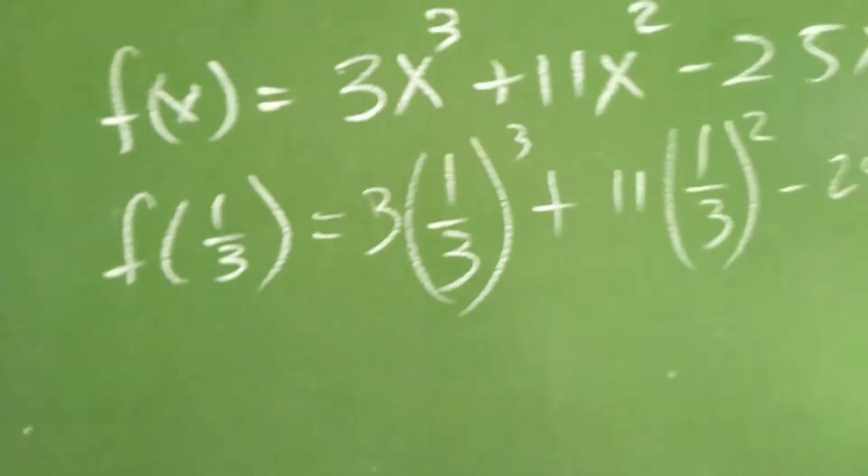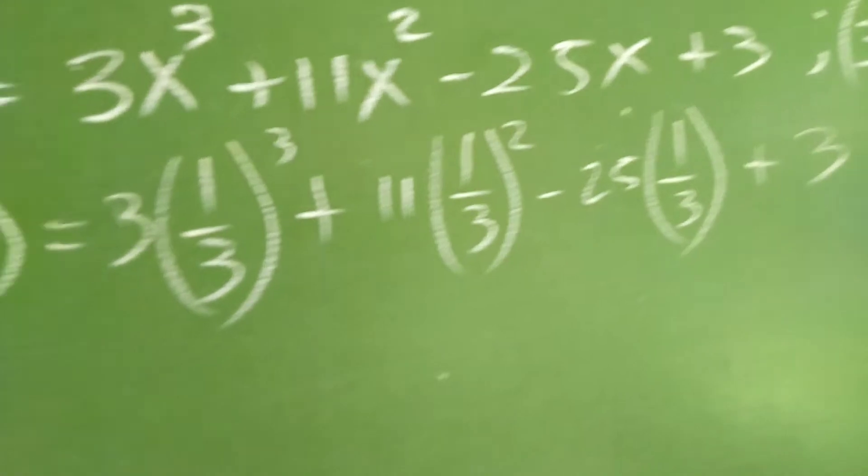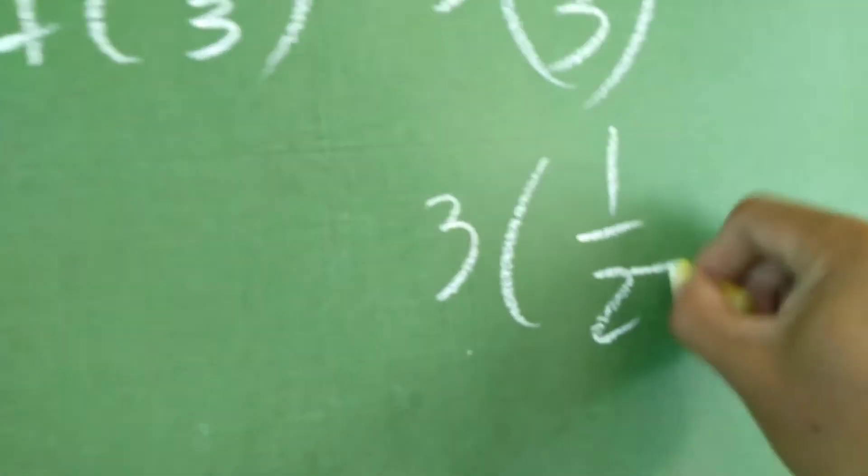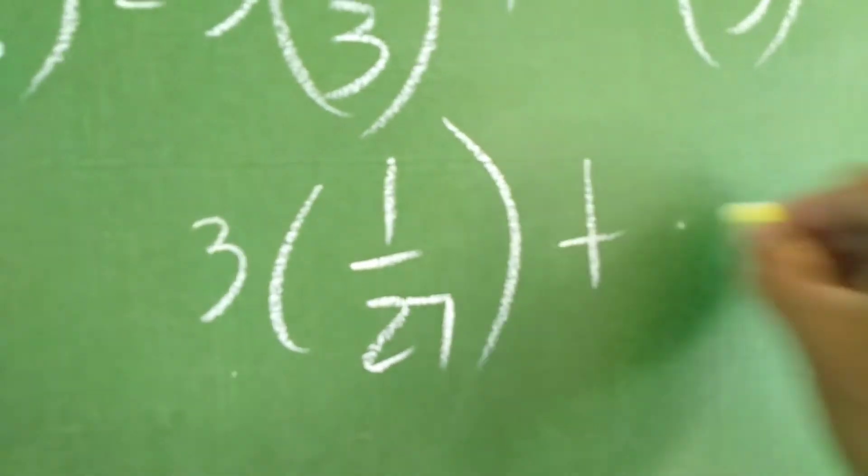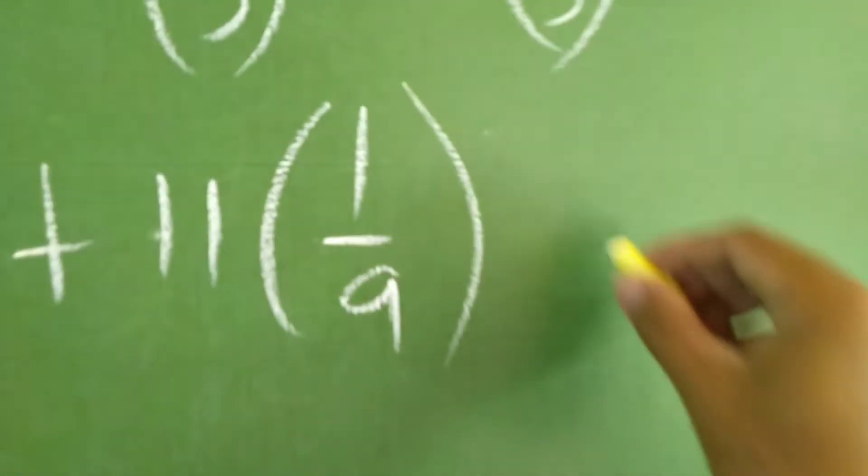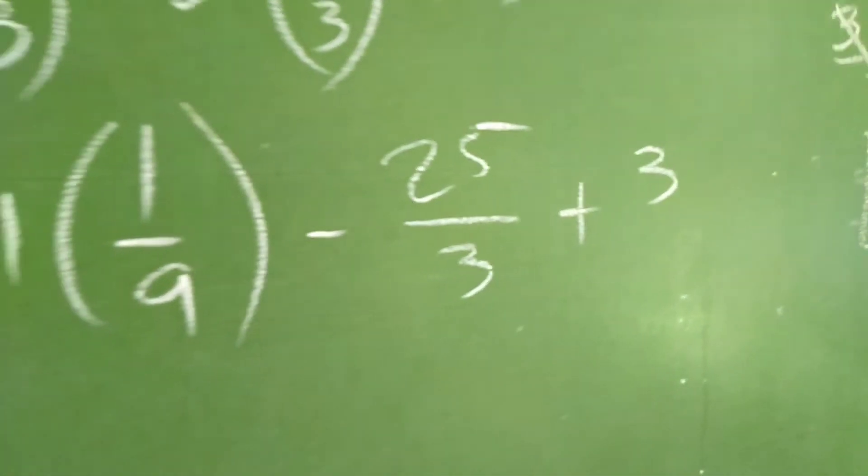Sinubstitute natin lahat ng makikita natin x, sinubstitute natin yung 1/3. Then, we have simplify natin ito. We have 3, 1 over 27 plus 11, 1 over 9 minus 25 over 3 plus 3.